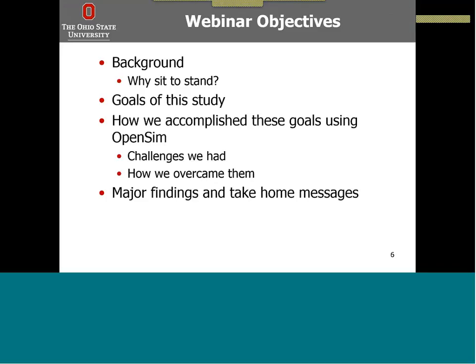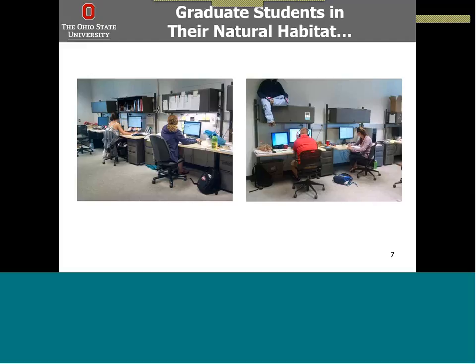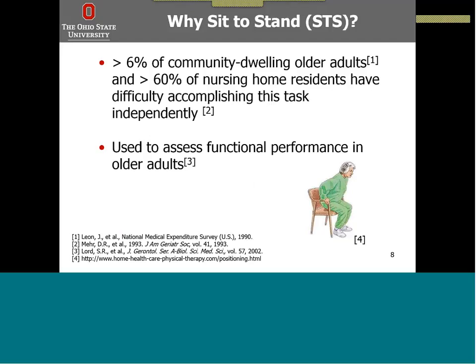We started by wondering why we should study this problem. Most of us take for granted the fact that we can complete this task easily and independently. But over 6% of community-dwelling older adults and over 60% of nursing home residents have difficulty accomplishing this task independently. Because of this difficulty, the sit-to-stand transfer task is often used to assess functional performance in older adults.